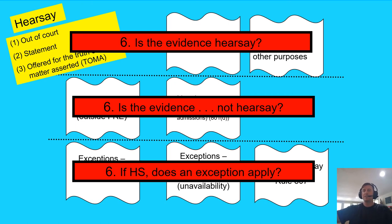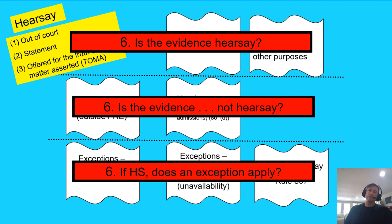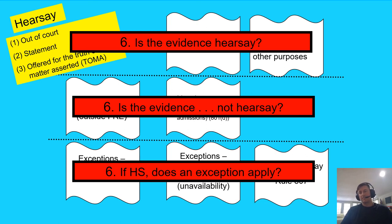Think about the options for the proponent. The proponent can say you don't have your definition, you don't have your one, two, three under hearsay — and we argue the yellow box. Or the proponent can say they have their own foundational requirements under 801d — not hearsay defined — and 801d trumps the objection under 801c. Or the proponent can say this may be hearsay, you may have your one, two, three under 801c, but an exception applies — maybe under 803, maybe under 804, or maybe the residual exception under 807.